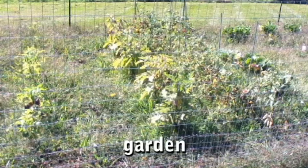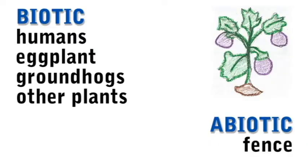The garden. Some biotic factors are the humans that pick the ripe fruits and vegetables and the groundhog that eats the plants. An abiotic factor is the fence, because it keeps the vegetation in the garden contained while also keeping other pests out.